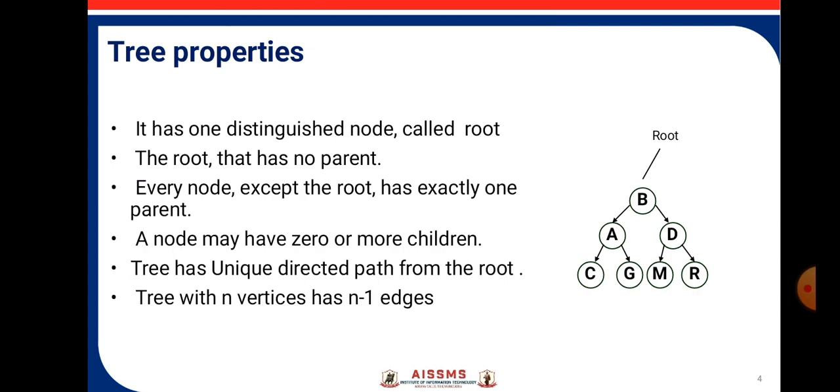The properties of trees: It has one distinguished node called as the root. The root has no parents. Every node except the root has exactly one parent. A node can have zero or more children. Tree has a unique directed path from the root. Tree with n vertices has n-1 edges.